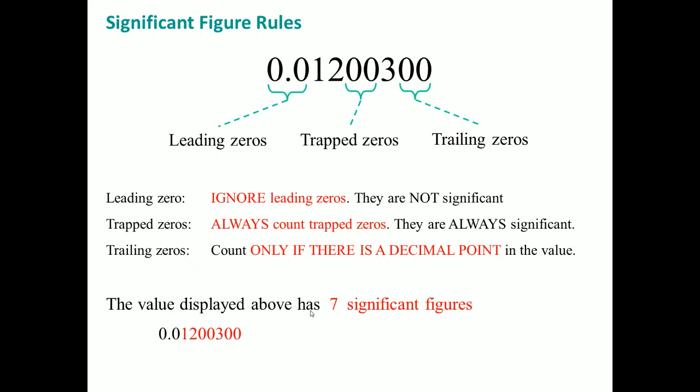Here's some rules. The leading zeros are in front and you can ignore them - they're not significant because you could always move them when you do scientific notation. Trapped zeros are the zeros in the middle between other numbers on the left and right, and you always count those. Trailing zeros are only at the end - you count them only if there is a decimal point in the value.